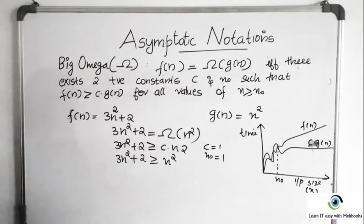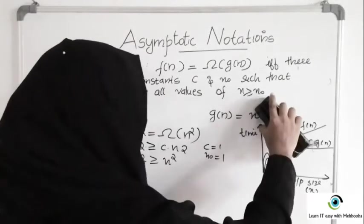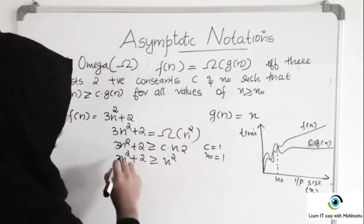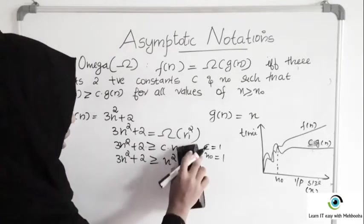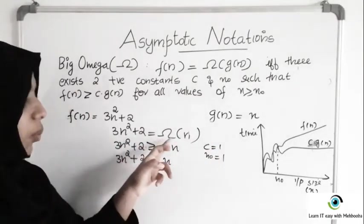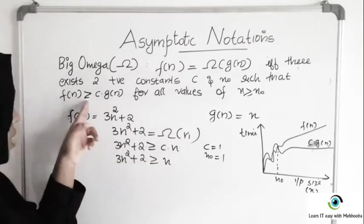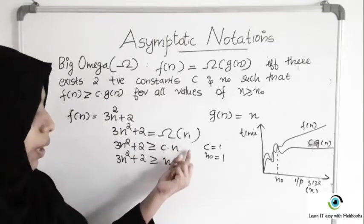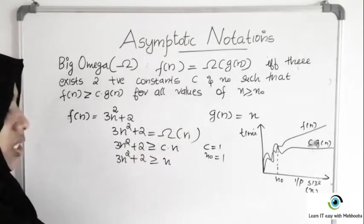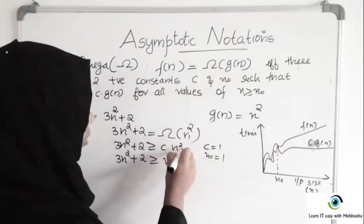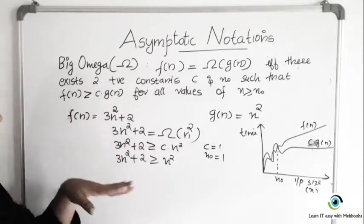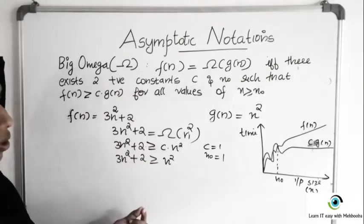You may feel that even if G of N is simply N, this inequality would still hold — that 3N square plus 2 is always greater than C times N. You might wonder what is wrong with writing 3N square plus 2 is Big Omega of N. But you should always find the maximum power function of N that satisfies this inequality — so you have to take N square, not N. Big Omega is a tight bound with greater than or equal to, so you must take the maximum power function of N which satisfies the inequality.